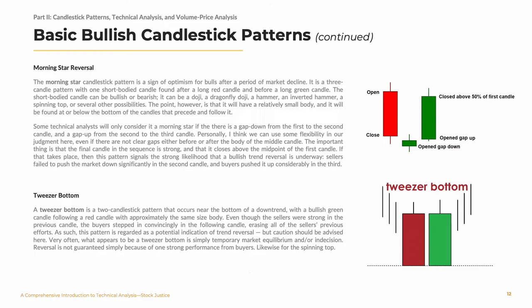A tweezer bottom is a two-candlestick pattern that occurs near the bottom of a downtrend with a bullish green candle following a red candle with approximately the same size body. Even though the sellers were strong in the previous candle, the buyers stepped in convincingly in the following candle, erasing all of the sellers' previous efforts. As such, this pattern is regarded as a potential indication of trend reversal. But caution should be advised here — very often what appears to be a tweezer bottom is simply temporary market equilibrium and or indecision. Reversal is not guaranteed simply because of one strong performance from buyers.